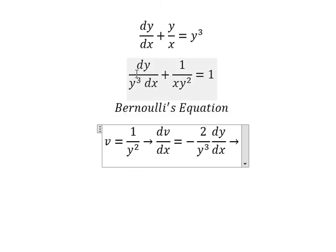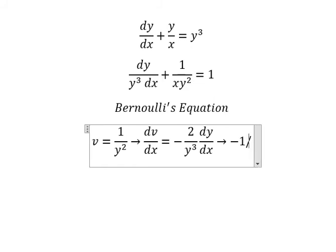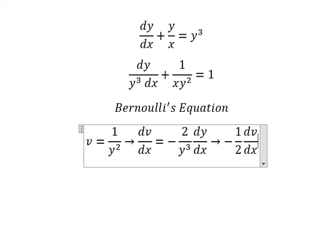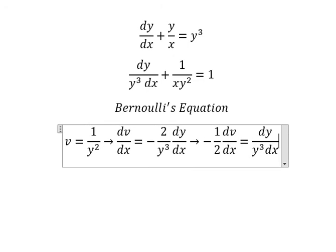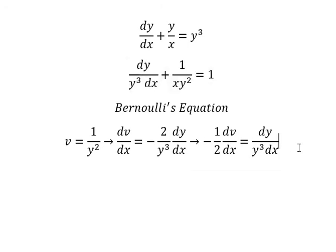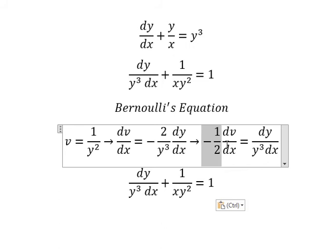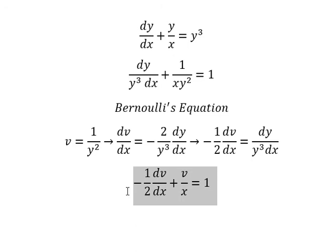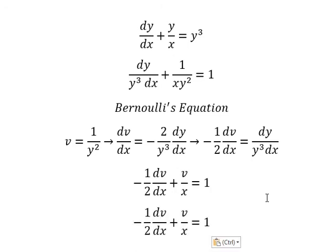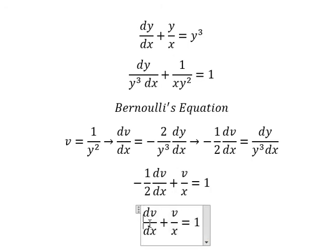Because we don't have negative number 2, we divide both sides by negative number 2. We change this one, and we change by v. Then we multiply both sides by negative number 2.